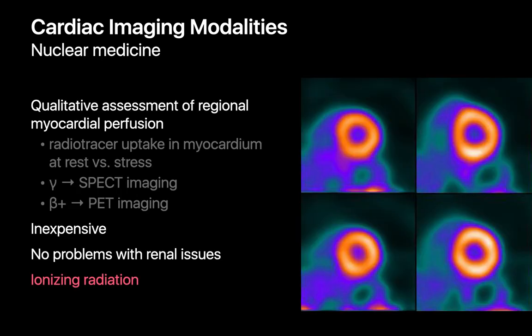Cardiac nuclear studies allow us to qualitatively assess myocardial perfusion in different regions of the left ventricular wall. Instead of imaging the heart with ultrasound waves like in echo, with cardiac nuclear studies we study how radiotracer uptake in the myocardium looks when the patient is at rest compared to how it looks when their heart is being stressed. That stress can be achieved by making the patient exercise or through pharmacologic techniques. When we use SPECT imaging to create the patient's images, the radiotracers used are ones that emit gamma rays, while when we use PET to create their images, radiotracers are used that emit positrons.